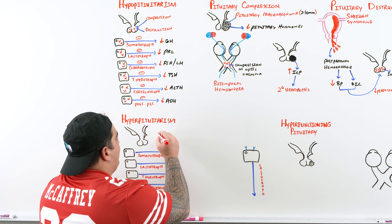If prolactin is deficient, there is inadequate stimulation of alveolar cells in breast tissue to produce milk. Prolactin also plays a role in breast tissue structure. A deficiency leads to inability to lactate postpartum — the baby needs breast milk from suckling, but since prolactin is deficient, the mother cannot produce it.